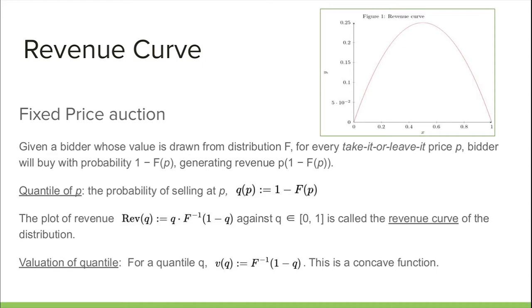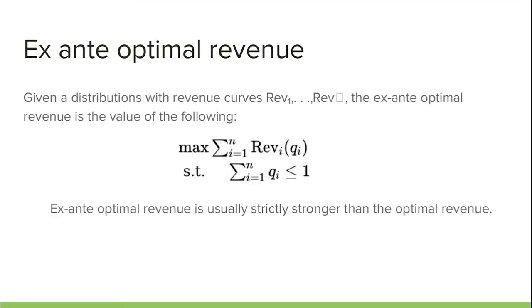The derivative of revenue at Q is called the virtual value of v(Q). Given regular distributions with revenue curves R₁ to Rₙ, the ex-ante optimal revenue tries to maximize the sum of revenues from each bidder. This ex-ante revenue is strictly stronger than the optimal revenue.